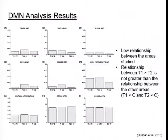These results show a fairly low level of relationship between the areas studied. The first five plots show delta, theta, alpha, beta, and gamma magnitude squared coherence between the extracted time series, and then high frequencies, with the last plot showing mutual information in the forward and reverse directions. What this shows is that the relationships between T1–T2 aren't necessarily greater than the relationships observed between T1–C and T2–C.